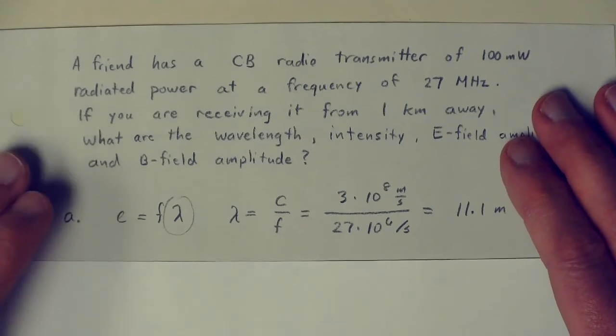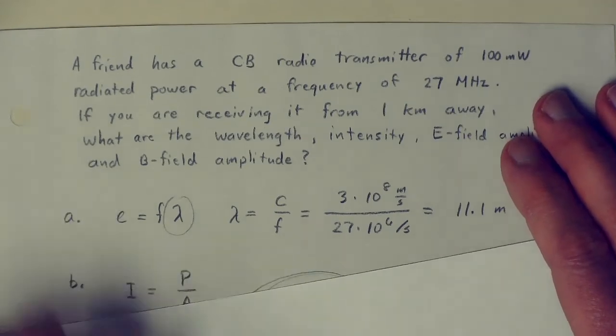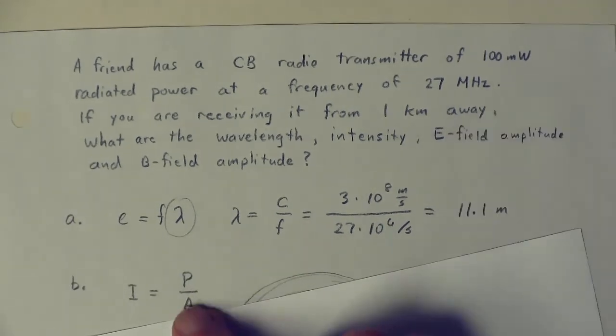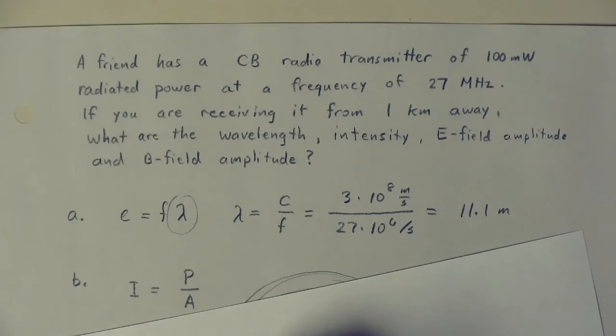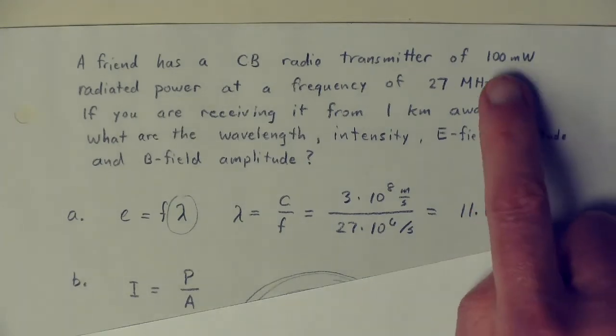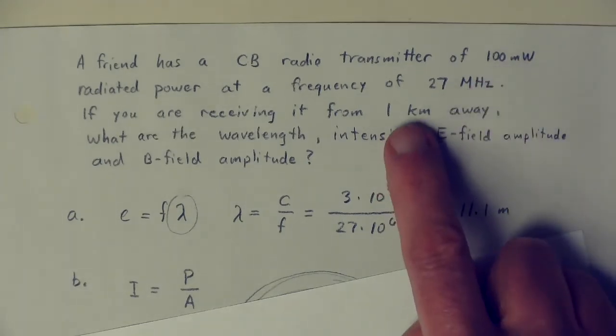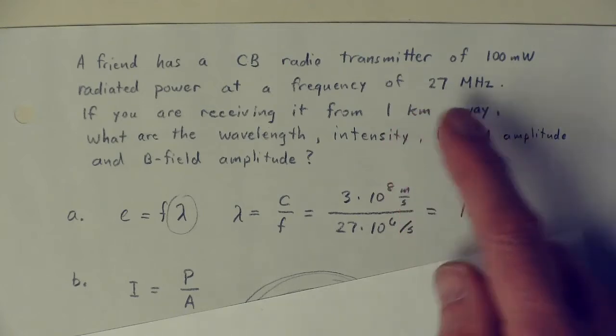But now what about intensity? You have to remember, what did we mean by intensity? Intensity is power per unit area. And the question is, what area do you use? It's clear enough what the power is, that's 100 milliwatts. But what area is that spread over? You're at one kilometer away. How is that wave spread out? What area is it spread over?